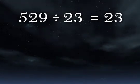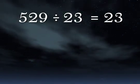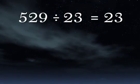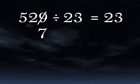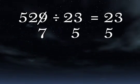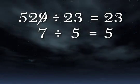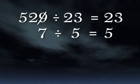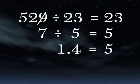529 divided by 23 equals 23. Let's check our work using digit sums. First of all, cross out the 9. 5 plus 2 is 7. And 2 plus 3 is 5. So the new problem is 7 divided by 5 equals 5. 7 divided by 5 is 1.4. So our new problem is 1.4 equals 5.